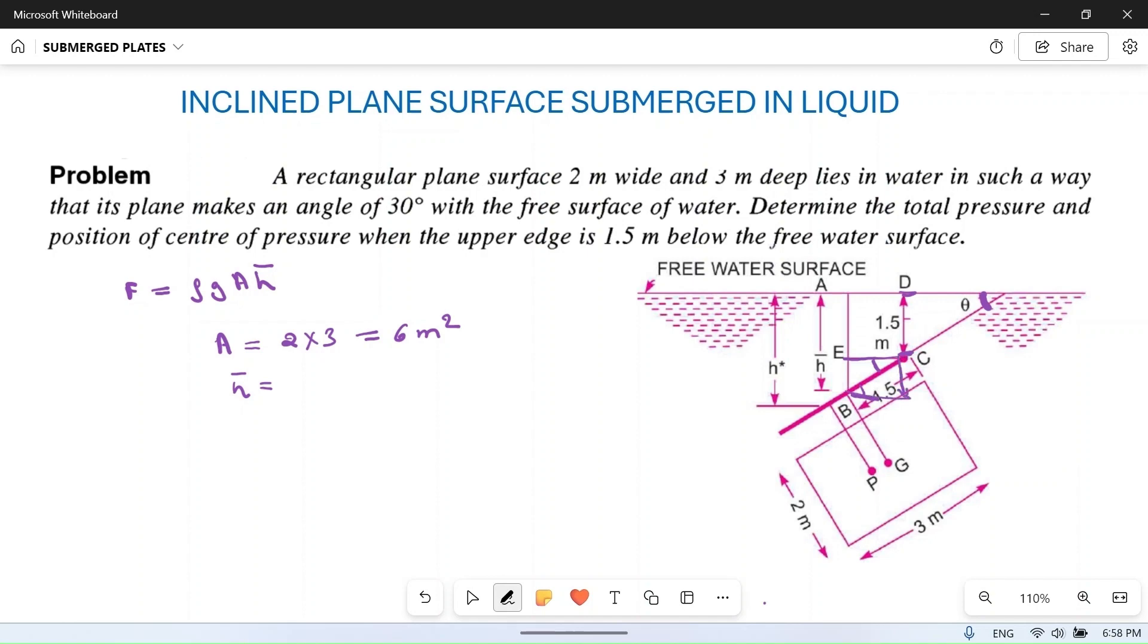From free surface, the depth is 1.5 plus the center of gravity will be here. We have to add this length, which is 1.5 sin θ, where θ is 30 degrees. So it will be equal to 1.5 plus 1.5 times sin 30, which equals 1.5 plus 0.75, equals 2.25 meter. This is h̄.